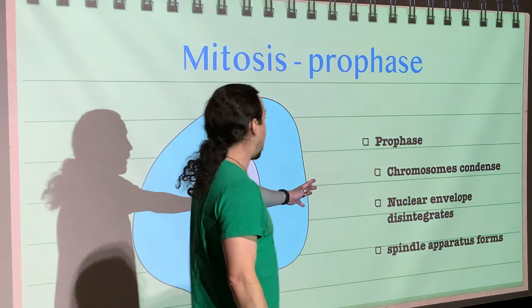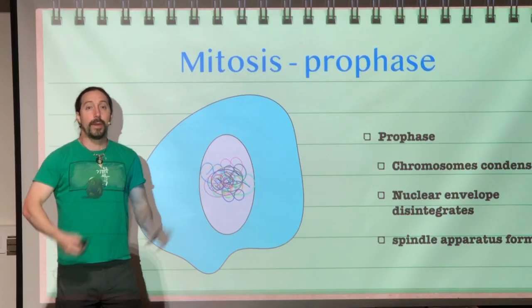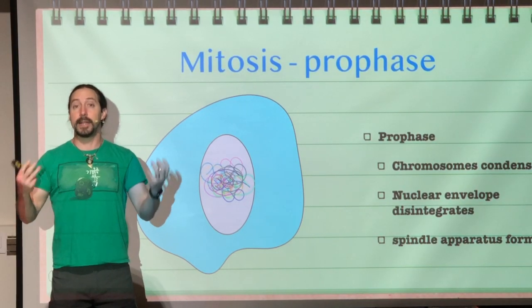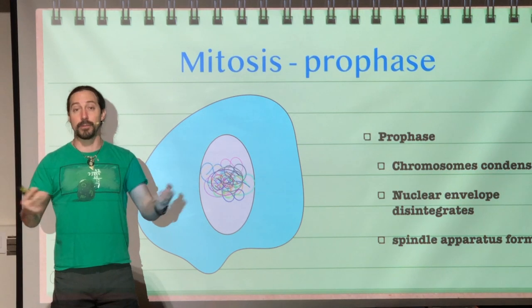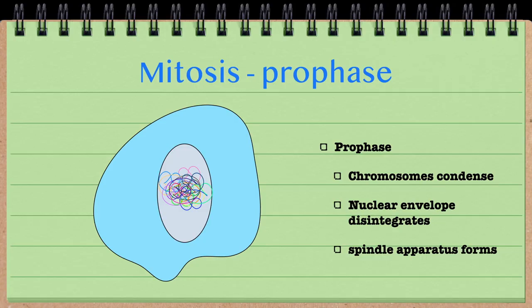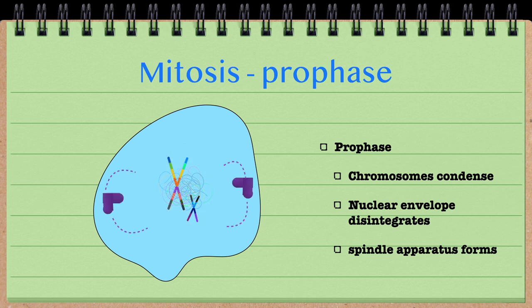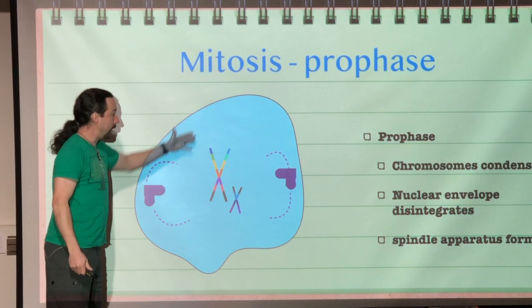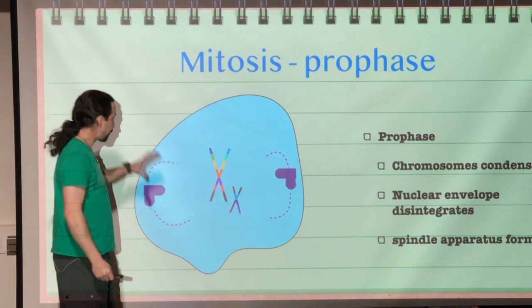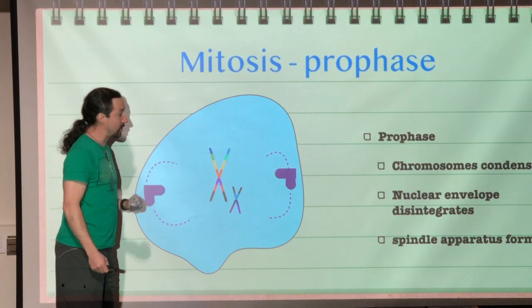Next, we also have to have our nuclear envelope disintegrate. We can't have a membrane around our nucleus because the chromosomes would be completely inaccessible to the rest of the cell. And lastly, we are going to form our spindle apparatus. The spindle apparatus differs slightly between animal and plant cells. So here, the chromosomes have condensed, we have lost our nucleus because it has disintegrated, and the spindle apparatus has started to form.